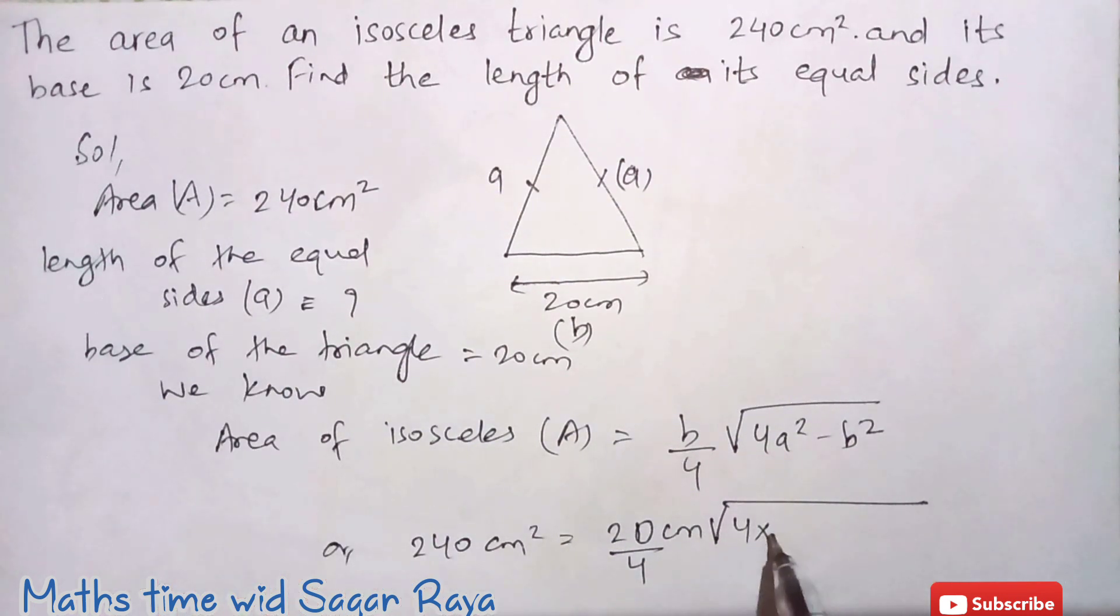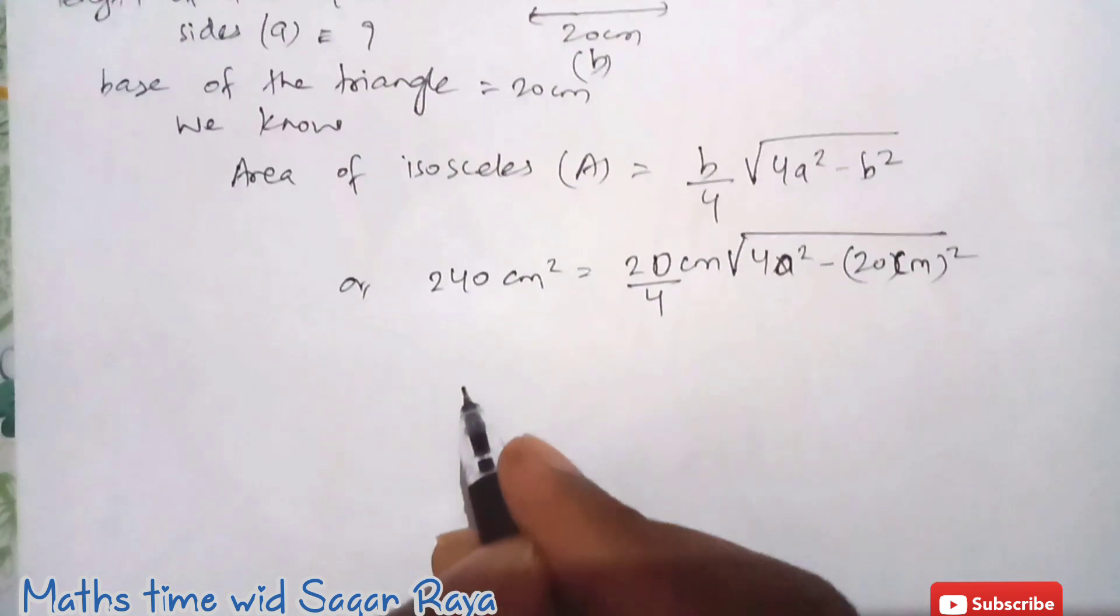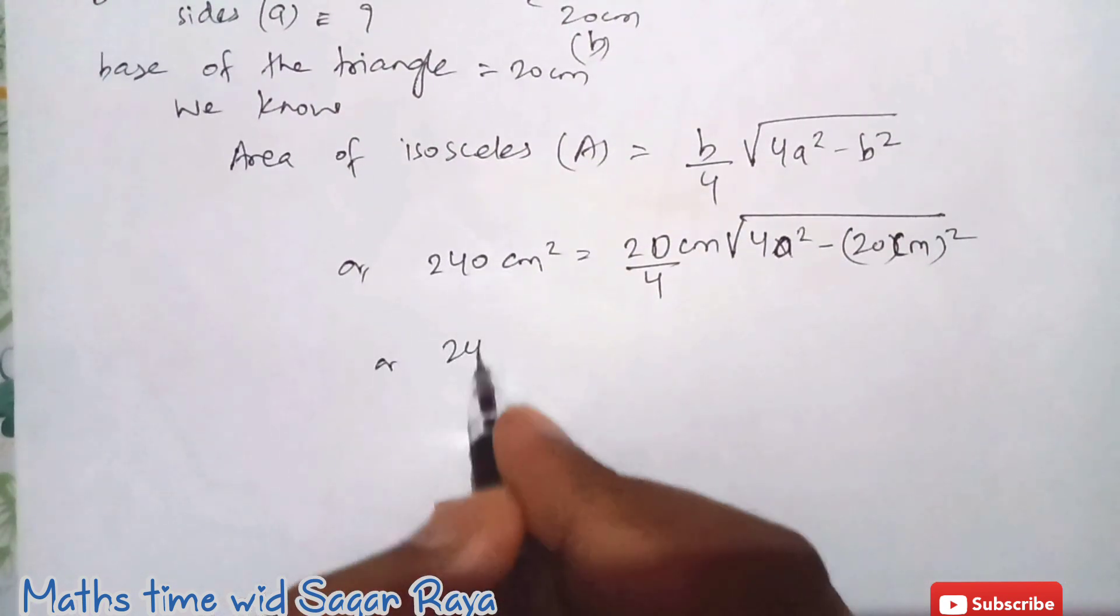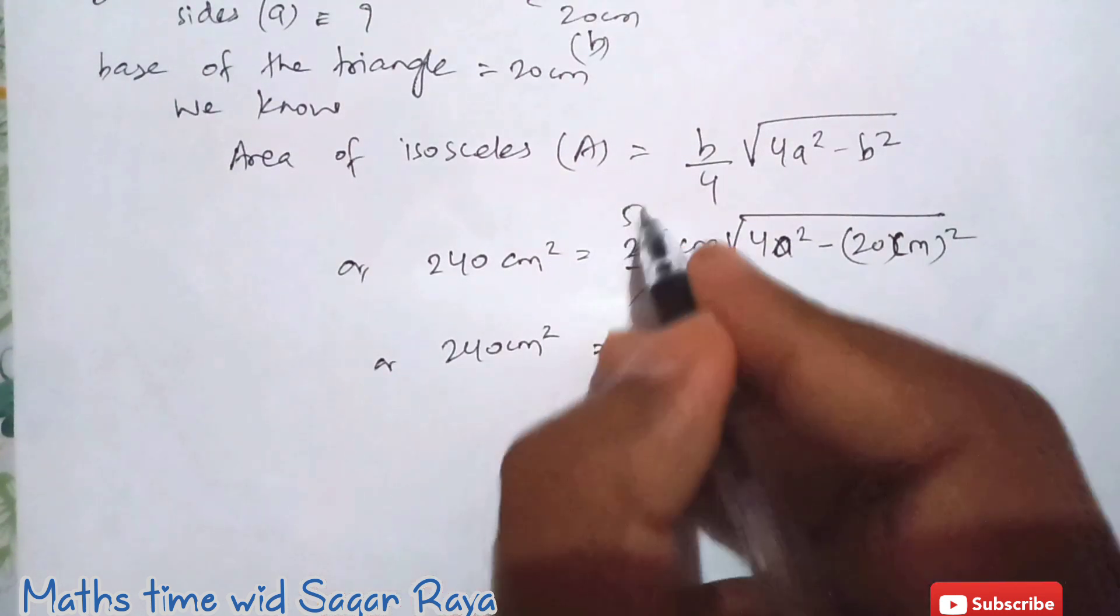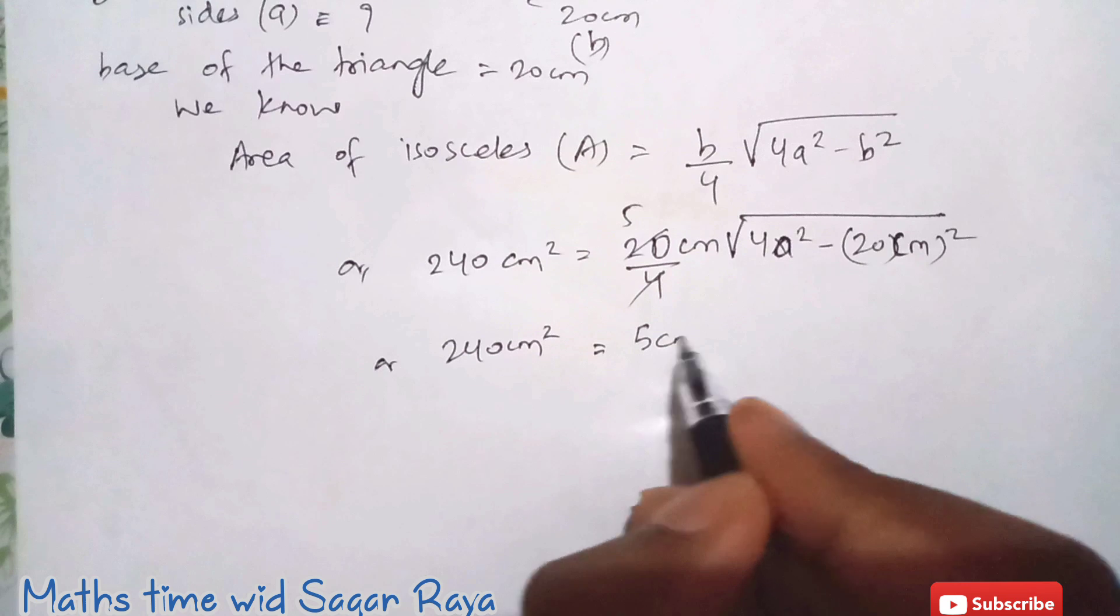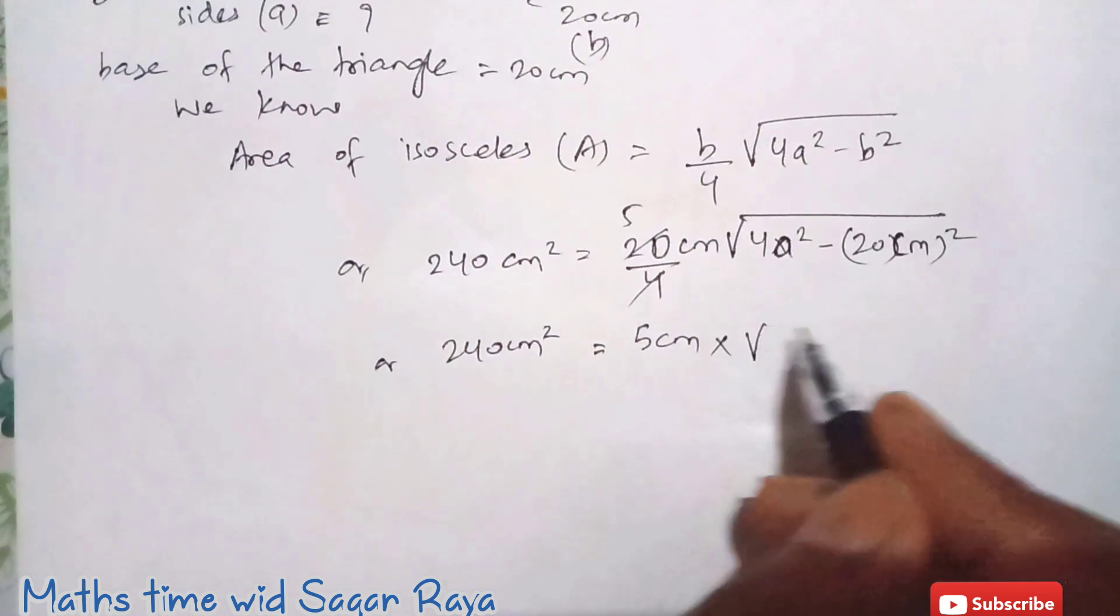So 20 by 4 and 4a square, so 4 times a, we don't know so we can just write it as 4a square minus b square. So what is b? B is 20, so just write down 20 cm all square.